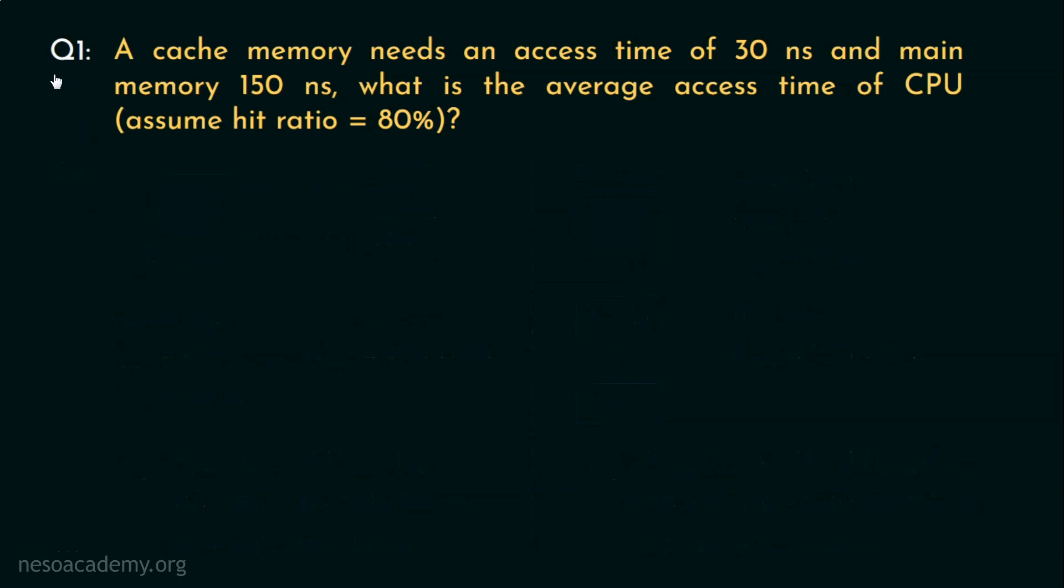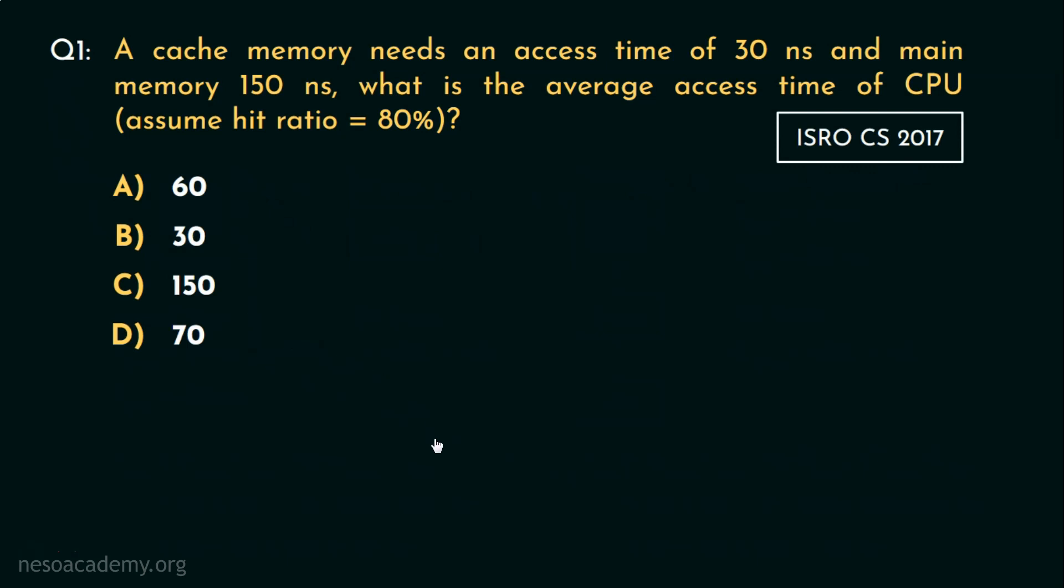Now, this question was asked in ISRO CS 2017 paper and these were the options. Judging the options, we can say the second approach produces the correct answer the examiners were looking for. So, option A, 60 is the correct choice for this question. Now, you might be thinking having two ways of solving the same question is a bit confusing. But let me tell you, here you need to do smart work. Look for the options first and then answer.